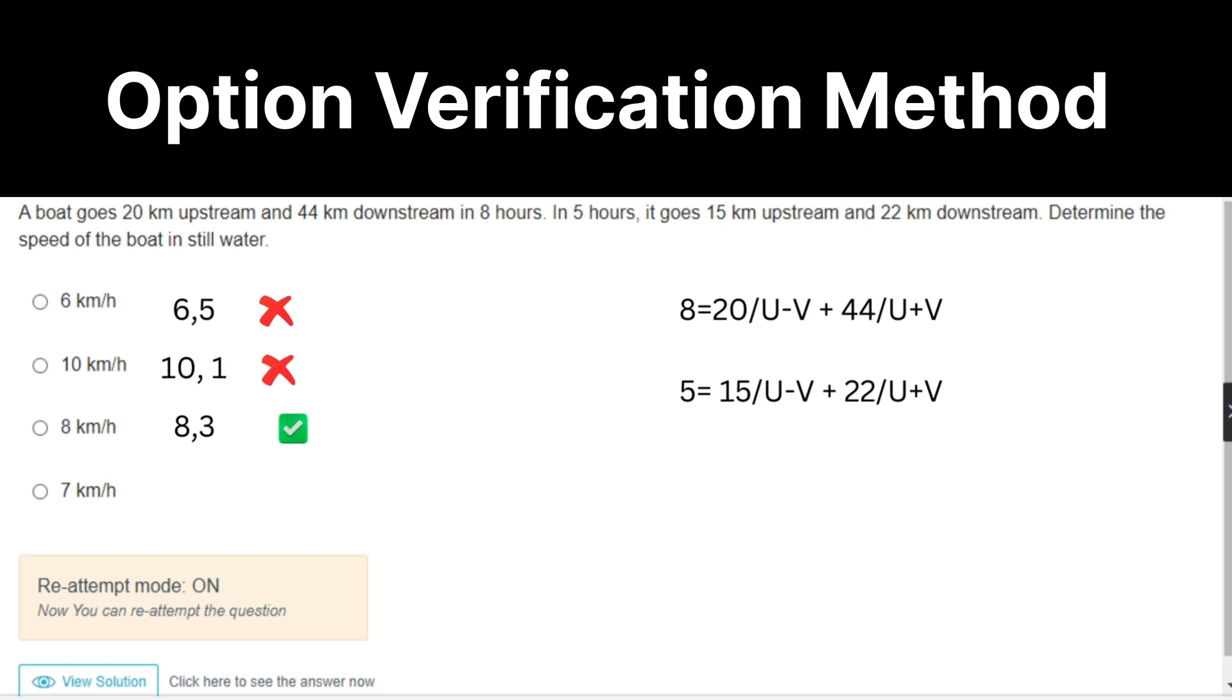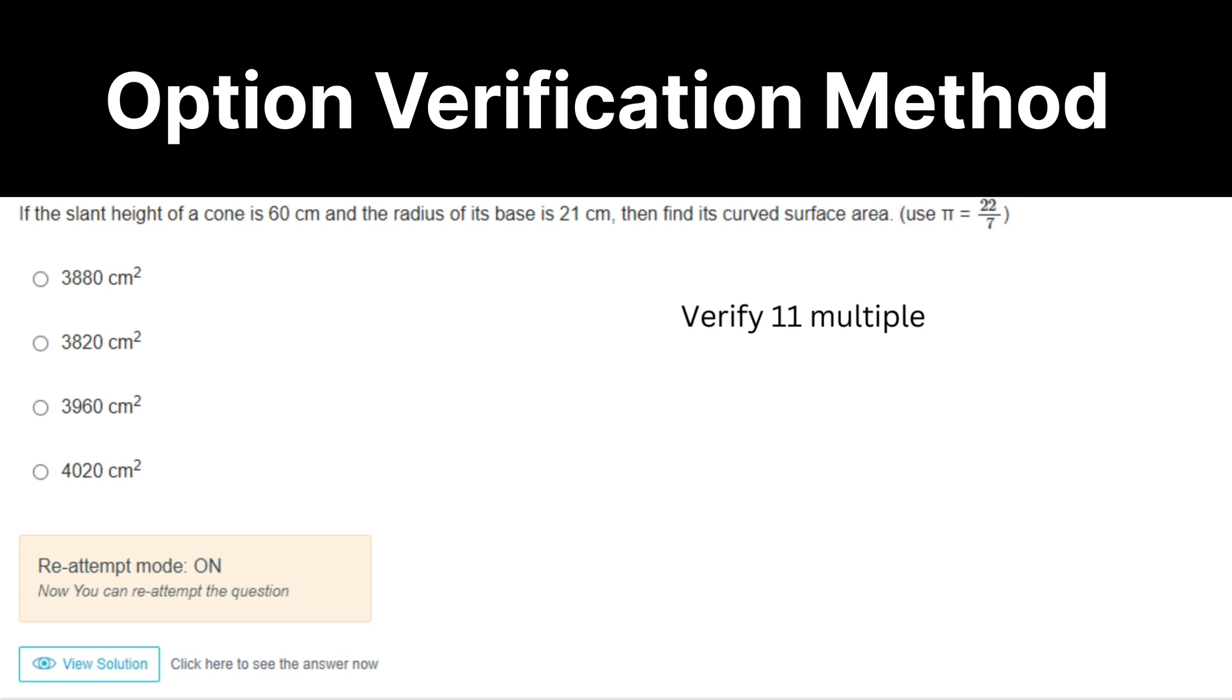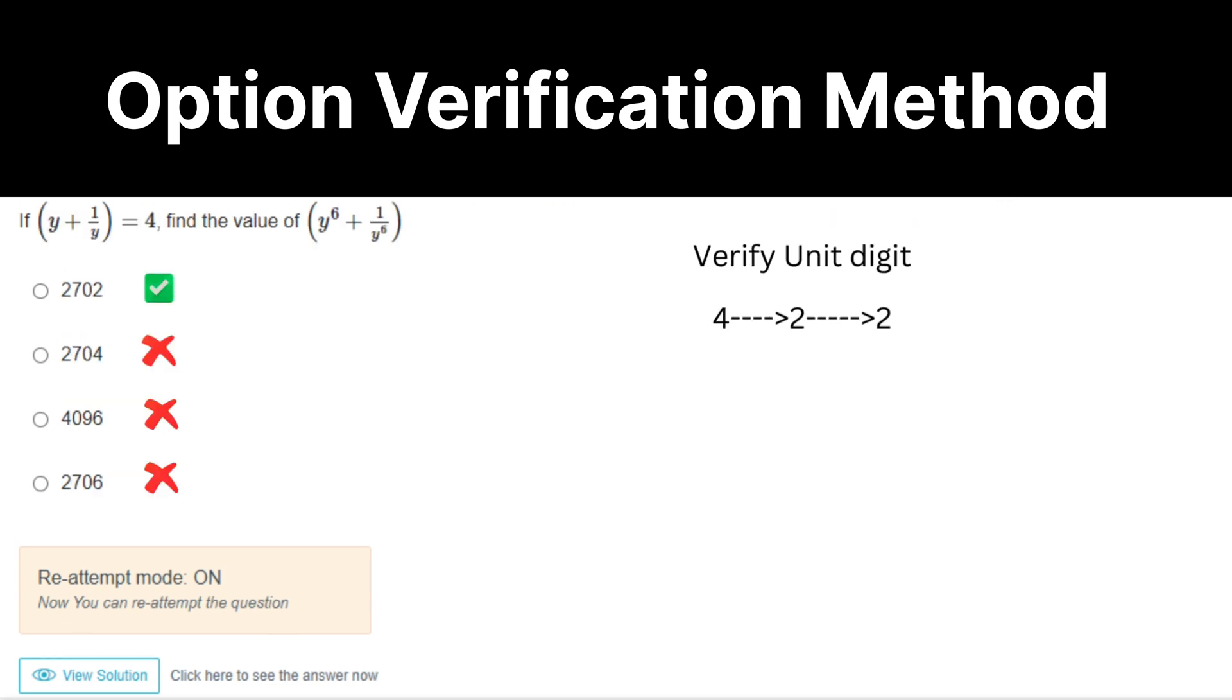Curved surface area. Verify the 11 multiple in the options. y plus 1 by y equal to 4. y cube plus 1 by y cube will be k cube minus 3k, which means unit digit will be 2. Now k square minus 2. Again, 2 square minus 2. Unit digit will be 2. That's it.